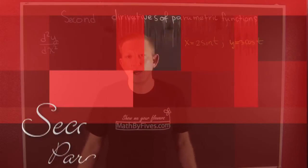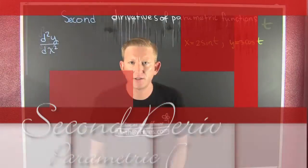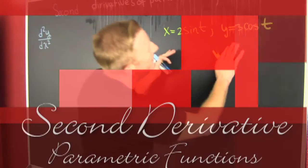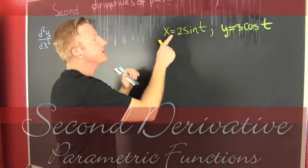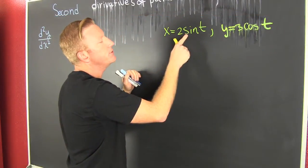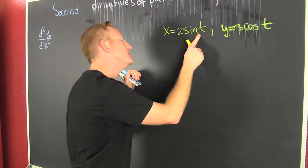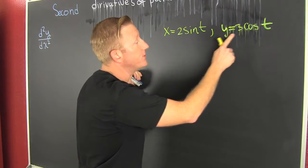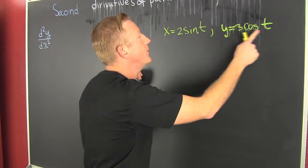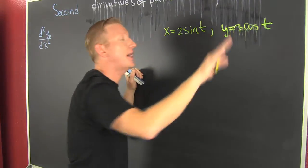The second derivative of a parametric function. Here we have x is equal to 2 times the sine of t, and y is equal to 3 times the cosine of t.